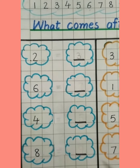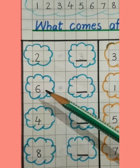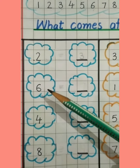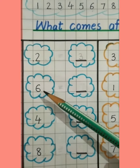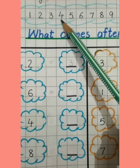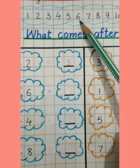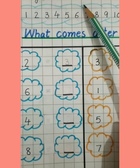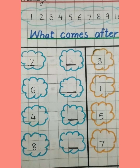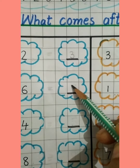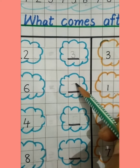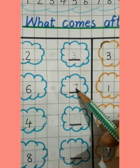Next is number 6. This is number 6. And what comes after 6? 1, 2, 3, 4, 5, 6 — and after 6 is number 7. So we have to write 7 here. Hamein yahan par kya likhna hai? Number 7.